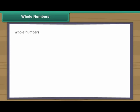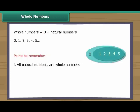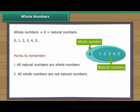Whole numbers. Whole numbers include zero and all the natural numbers. Points to remember. One, all natural numbers are whole numbers. Two, all whole numbers are not natural numbers. Three, there is no largest whole number.